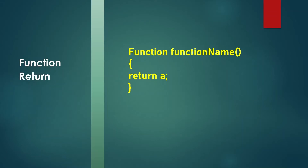A function is also used to calculate or execute statements and return some output. You can use the return keyword with any value or variable that holds a value, and this will return the output once the function is called. So whatever code you run inside a function can return some output, and you can store that value outside the function as well — you can return the output with the return keyword and then use that value outside the function.